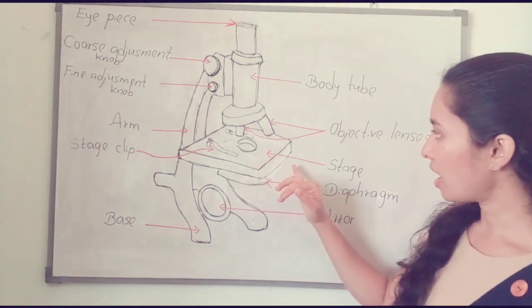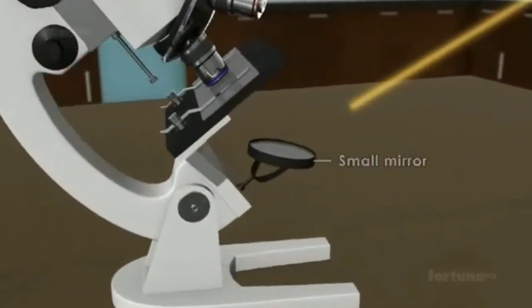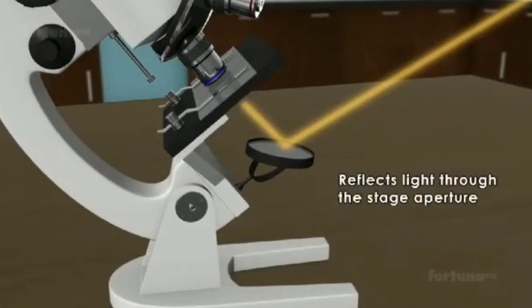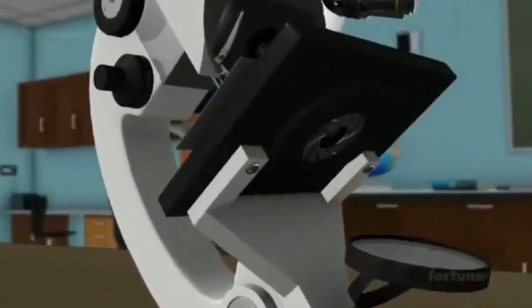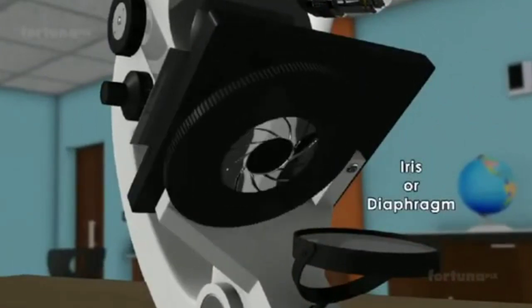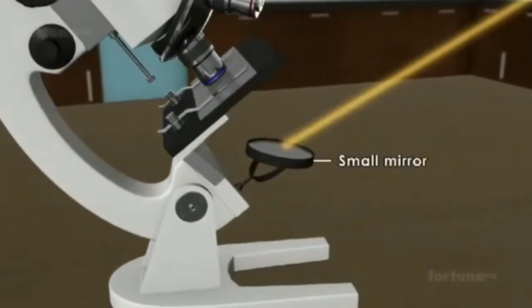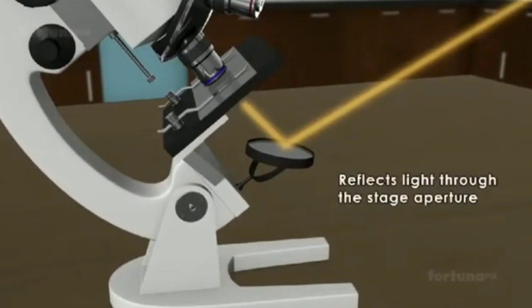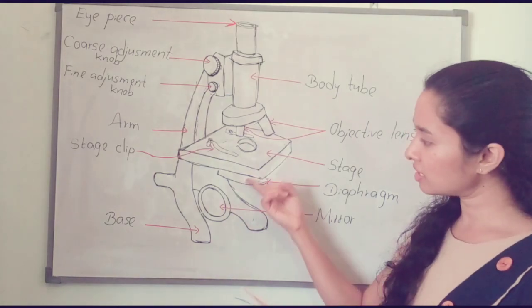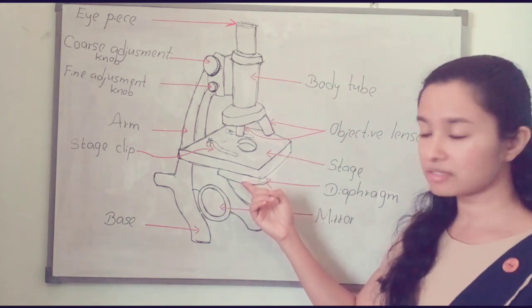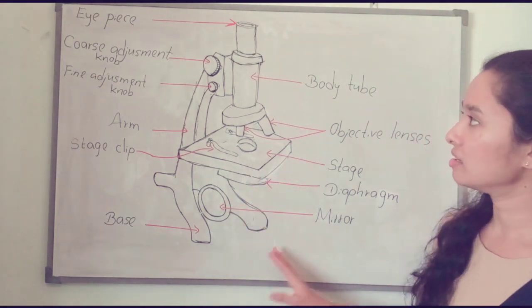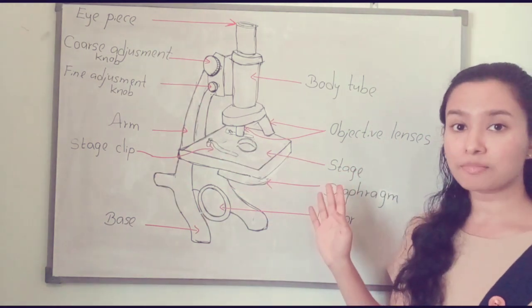Next is the stage — I have already discussed this. Then the diaphragm: we use the diaphragm to control the amount of light obtained on the specimen. And there is a mirror — we can use a flat or concave mirror — which is used to focus light onto the diaphragm. These are the parts of the light microscope.